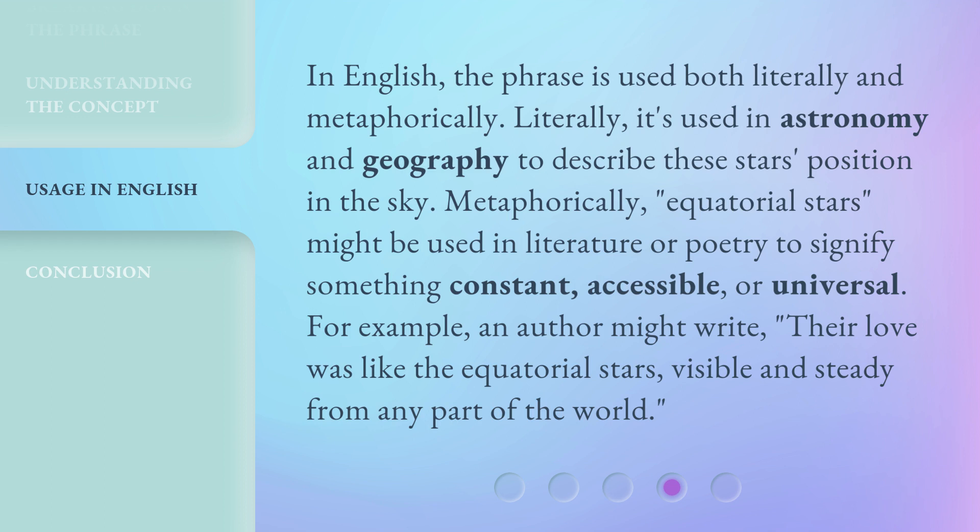Metaphorically, equatorial stars might be used in literature or poetry to signify something constant, accessible, or universal. For example, an author might write: 'Their love was like the equatorial stars, visible and steady from any part of the world.'